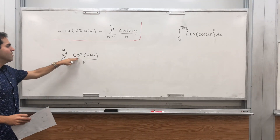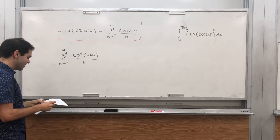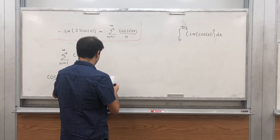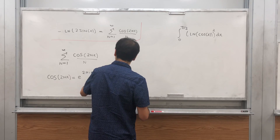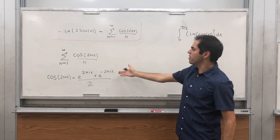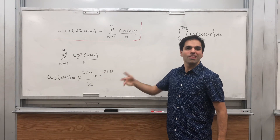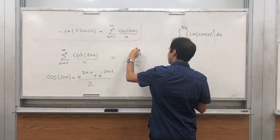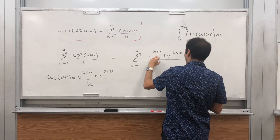We would like to use cosine in terms of exponential functions. Remember that cos(2nx) can be written as (e^(2inx) + e^(-2inx)) / 2. This is generally true: (e^(iθ) + e^(-iθ)) / 2 = cos(θ), using the formulas for e^(iθ). In particular, our sum becomes the sum from n = 1 to infinity of (e^(2inx) + e^(-2inx)) / (2n).